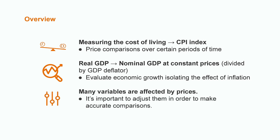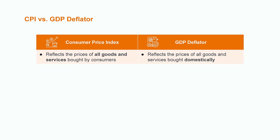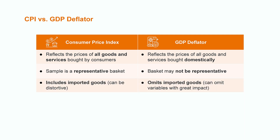However, there are many variables affected by prices, so it's important to adjust them in order to make accurate comparisons. We could use the CPI or the GDP deflator, but which one? This table is a quick overview of the differences between both indicators. As we may see by the definition, GDP deflator considers all the goods and services bought domestically, while the CPI considers a representative basket. This aims to omit certain goods that may be more exclusive, such as jewelry, airplanes, or yachts — those are considered in the GDP deflator. Also, CPI includes imported goods, since it's not restricted to domestic consumption.